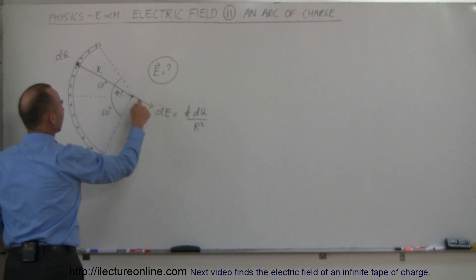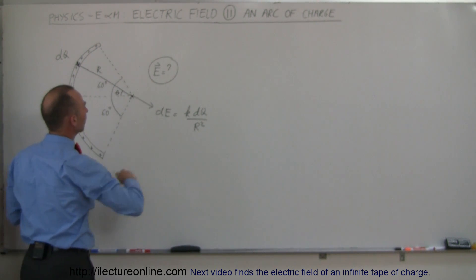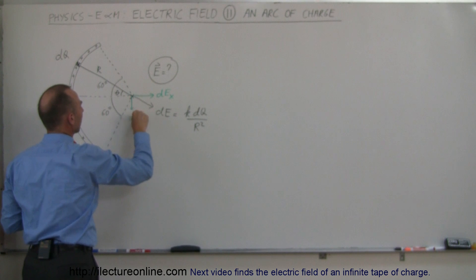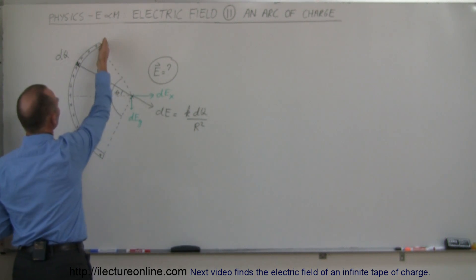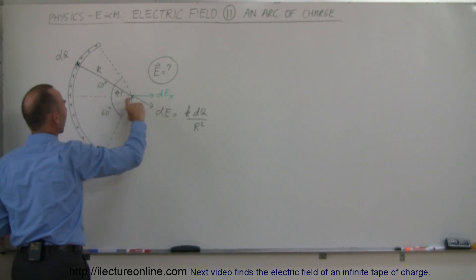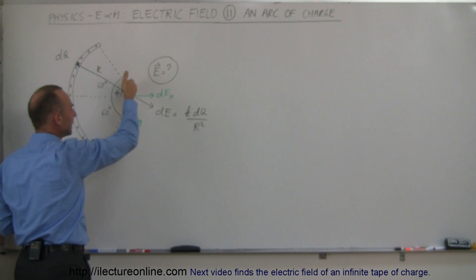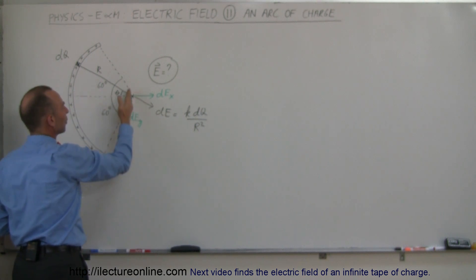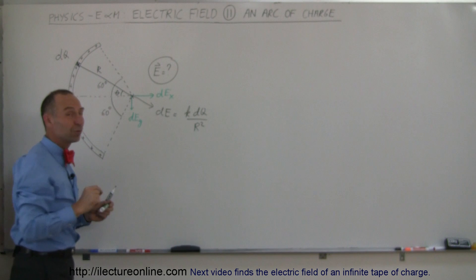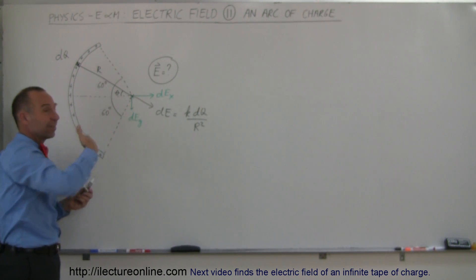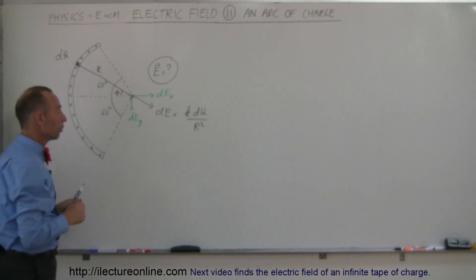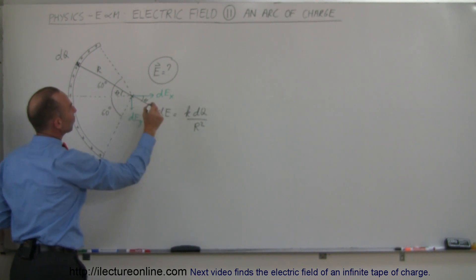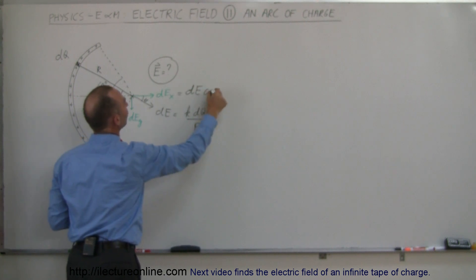DE will have a horizontal and a vertical component — a DE in the X direction and a DE in the Y direction. The vertical components of all segments on the top half of the arc will cancel each other out by symmetry, so we only have to worry about the horizontal components, the DEX. If this angle here is theta, then DEX is equal to DE times the cosine of theta.